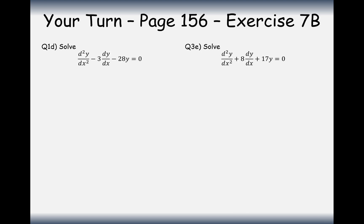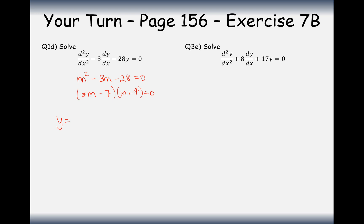Let's have a go at two questions together from page 156. For question 1d, the auxiliary equation is m squared minus 3m minus 28 equals zero. Factorising gives (m minus 7)(m plus 4) equals zero, so m equals 7 and m equals minus 4. The answer is y equals Ae to the 7x plus Be to the minus 4x.